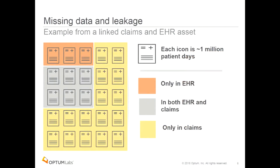Here's another example: missing data. We talk about EHR data potentially missing some clinical encounters. Claims data is theoretically a closed system, so we think we have all the utilization during certain time periods. Each icon in this picture represents one million patient days. The reddish color represents dates that only appeared in the EHR; the gray are dates that appeared in both; and the yellow — what most of us would expect — are lots of clinical encounters that only appear in the claims data. But the red is what surprises most people: why do we have encounter days that only appear in the EHR data and not in the claims, when we assume claims to be the gold standard for utilization events?